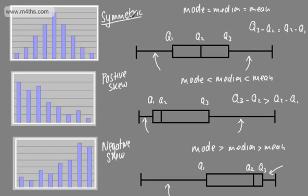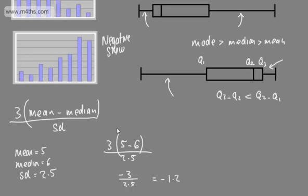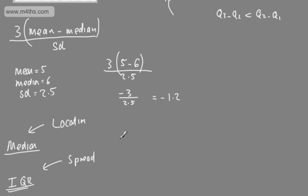Let's go through those again. For a symmetric distribution, the mode, median, and mean are the same, and the distance between the median and the upper quartile equals the distance between the lower quartile and the median — the two box plot legs are equal. For positive skew, lots of data observations are to the left, and the distance from the median to the upper quartile is greater than to the lower quartile. For negative skew, lots of observations are to the right, and that distance is less. We can calculate skewness numerically — a negative value means negative skew, and the larger the magnitude, the more skewed. If data is skewed, choose the median for location and the IQR for spread.